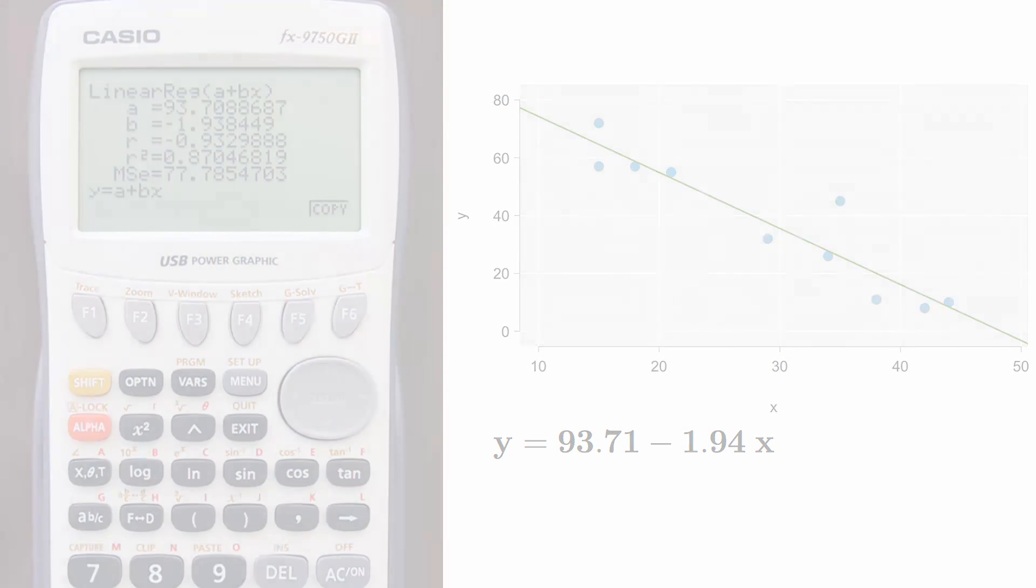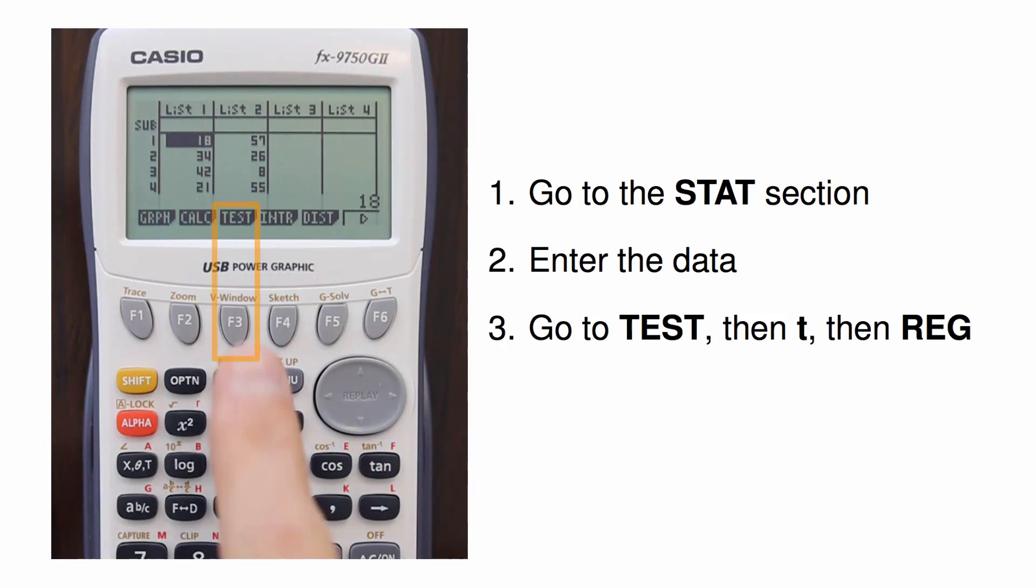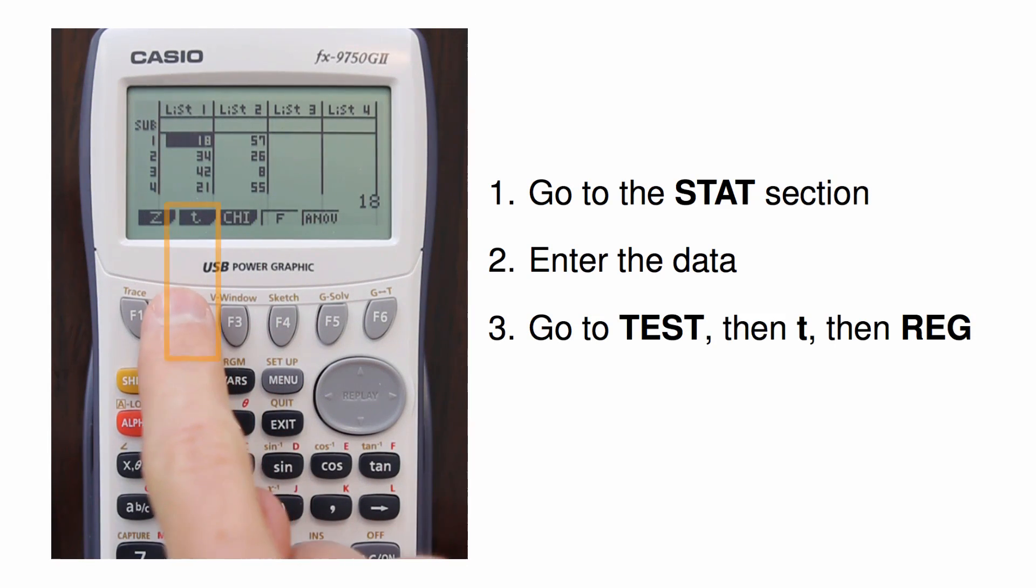In the next video, I'll cover how to perform a t-test to evaluate whether there is strong evidence that the slope of the line is different than zero.